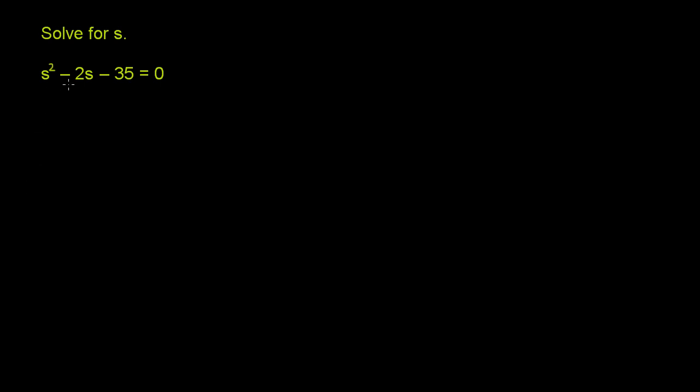Solve for s. We have s squared minus 2s minus 35 is equal to 0. So when you have an equation like this, you're going to find that with traditional algebraic methods, you're not going to be able to actually solve for s. What you want to do is factor this expression on the left-hand side, and then use the knowledge that if you have the product of a bunch of things equaling 0, then at least one of them has to be equal to 0.